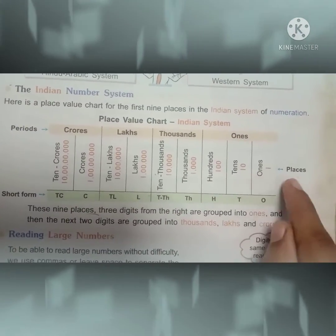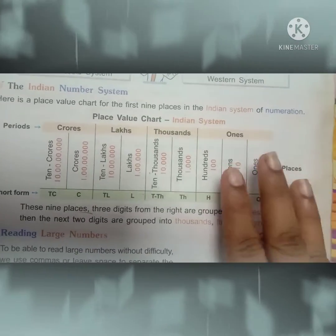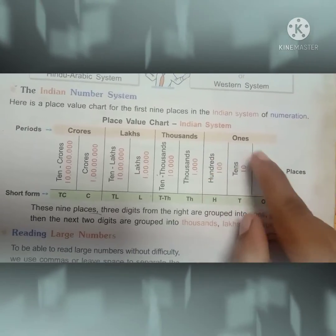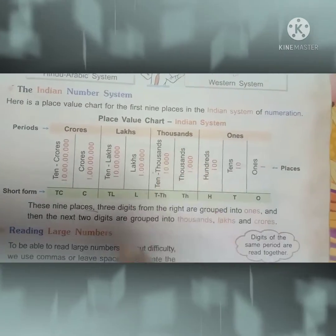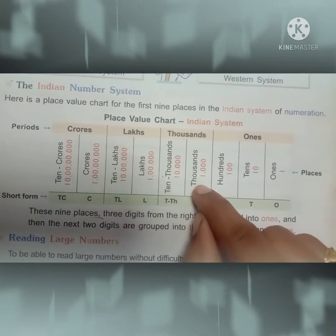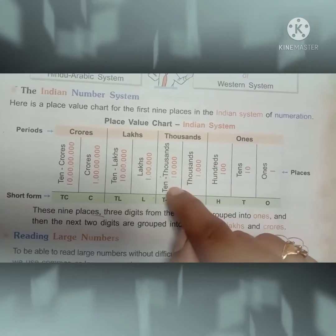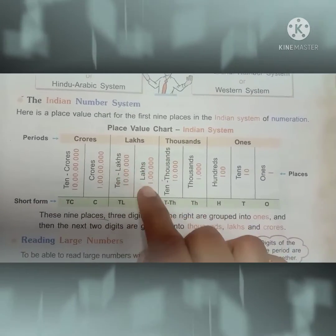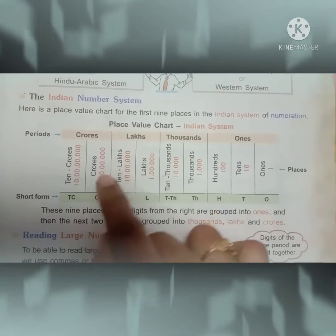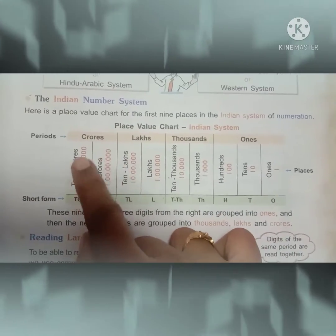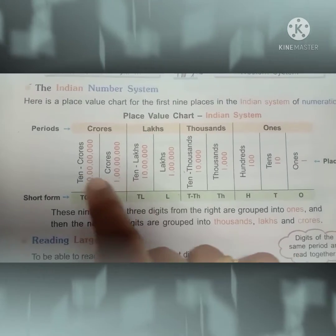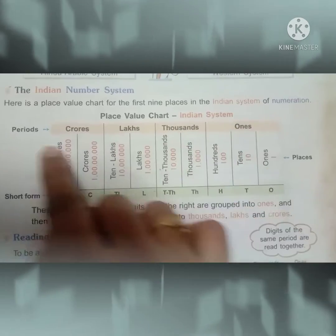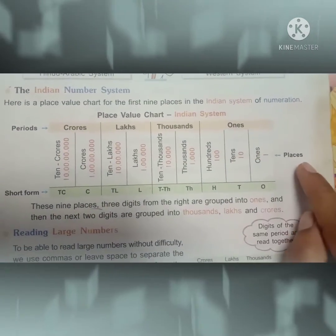Now see the places. In the ones period there are three divisions: ones, tens, hundreds. Thousands has two divisions: thousands and ten thousands. Lakhs also has two divisions: lakhs and ten lakhs. Next, crores and ten crores. These are called the place values. These four belong to the periods and these are called the places.